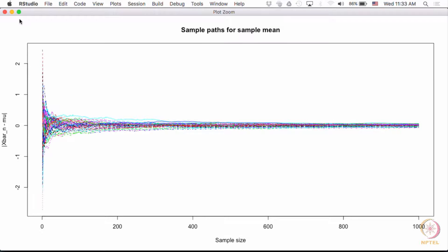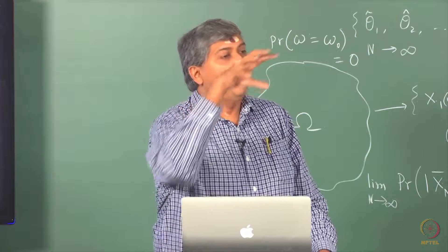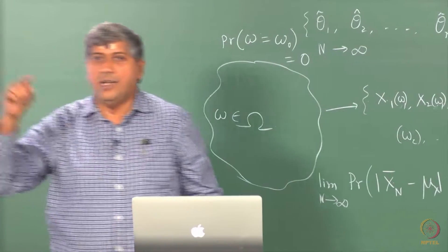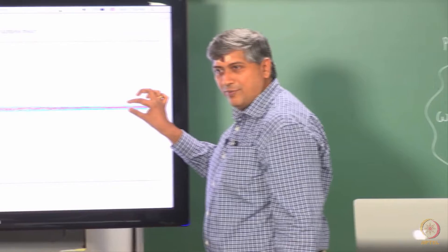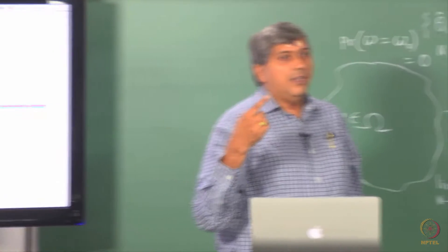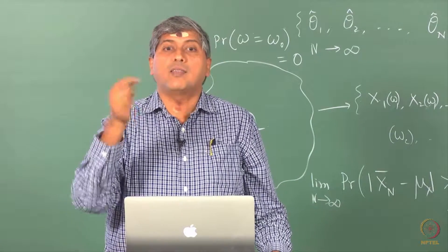What is on the x-axis? Sample size, which is n. So if you are standing here, then n is 1 and you are computing the difference between x̅ computed from one observation minus the truth, which is 2, and that difference obviously is going to be quite large. As I keep increasing the sample size, the distance between the estimated value and the truth keeps coming down. I am only showing you 50 sample paths. Ideally you should go back and do it for many many sample paths. You can see that they are all within some bound.